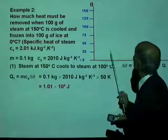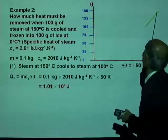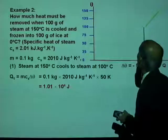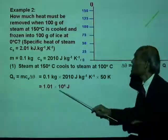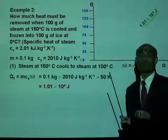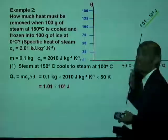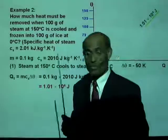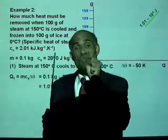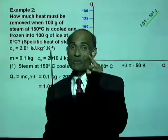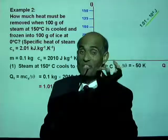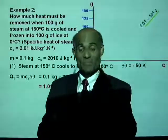On the graph, we start at 150 degrees Celsius and the steam cools down to 100 degrees Celsius, losing 1.01 times 10 to the 4 joules. Now steam is at 100 degrees Celsius — what happens next? It is going to change its state from steam to water, so all the steam at 100 degrees Celsius is going to condense back to water at the same temperature.